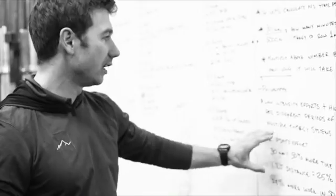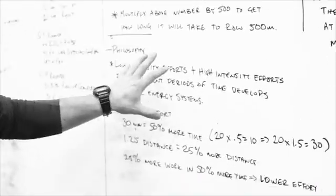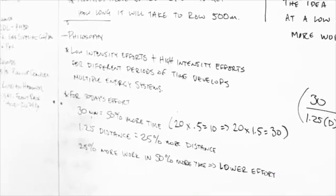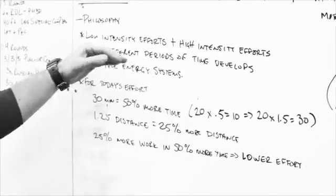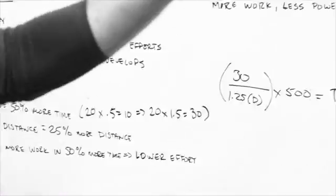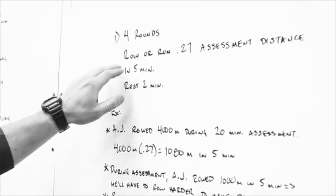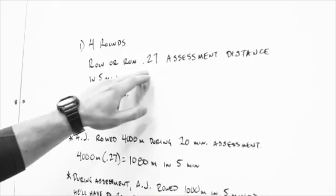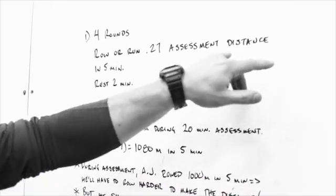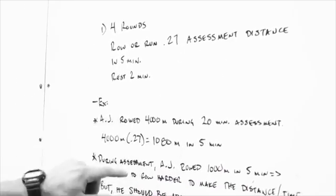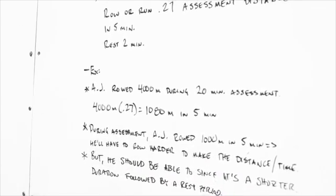So on the other side of that, looking back at our philosophy, low intensity efforts, that's what we've just described, and high intensity efforts for different periods of time, develop multiple energy systems. So let's look at what we're going to do on Tuesday. It'll be something like this. We actually did this last week. So we're going to do four rounds and then you're going to row or run 0.27 your assessment distance in five minutes. And then you're going to rest for two minutes. That's what the circuit's going to look like.